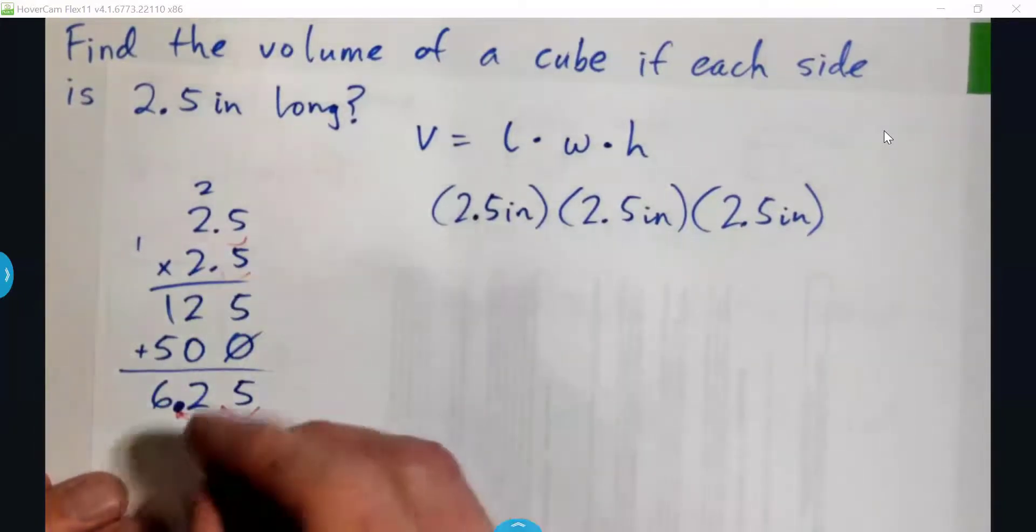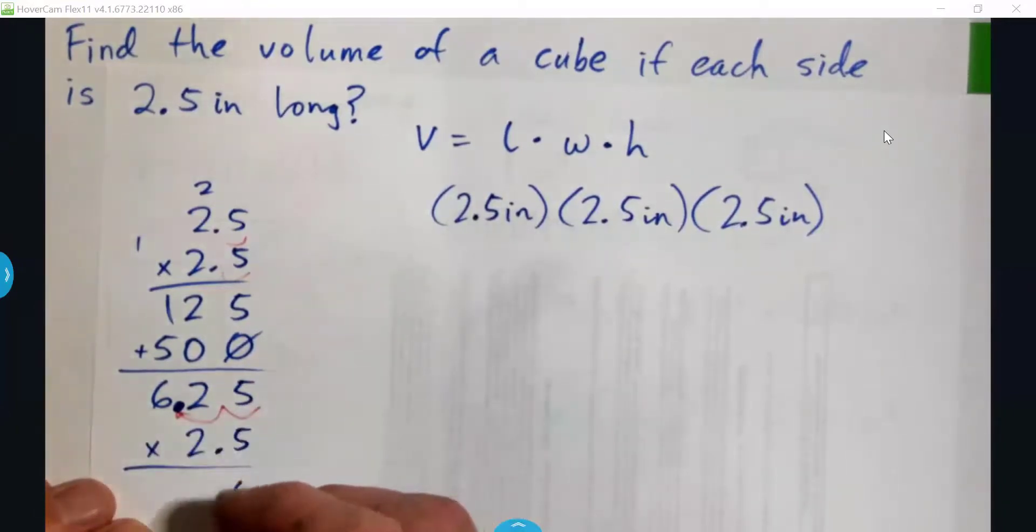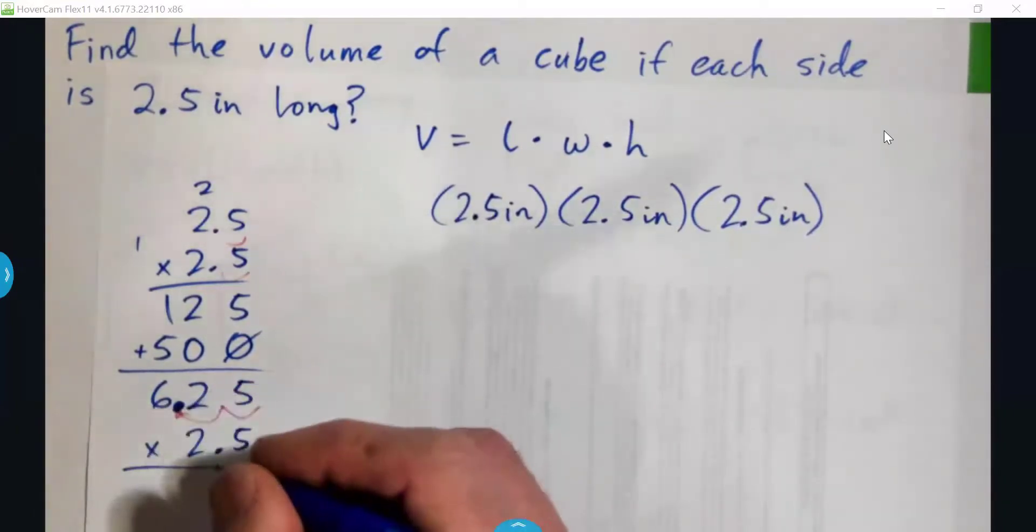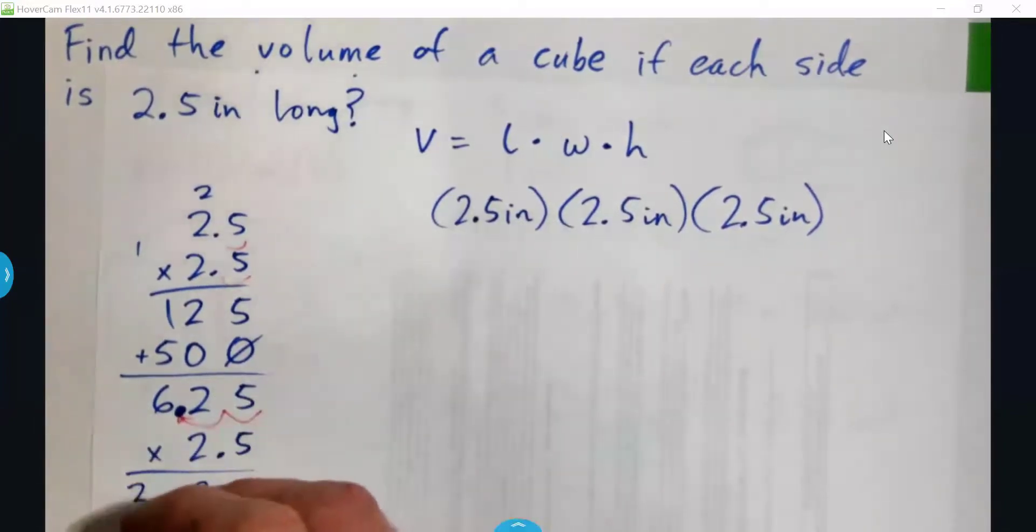And that's just multiplying 2, then we've got to multiply by 2.5 again. 5 times 5, 25, carry 2. 5 times 2 is 10, 2 is 12, carry 1. 5 times 6 is 30 and 1 is 31.